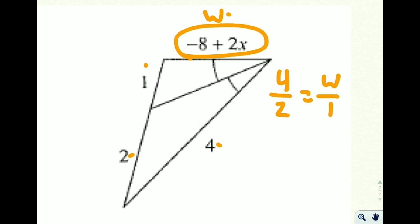We know that 4 over 2 should be equal to this w over 1. And when we cross multiply here, we have 2w equals 4 times 1, which is 4.